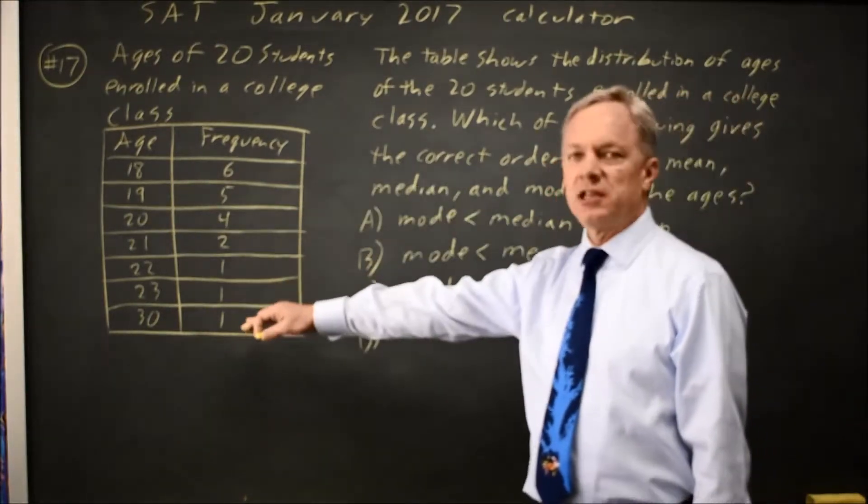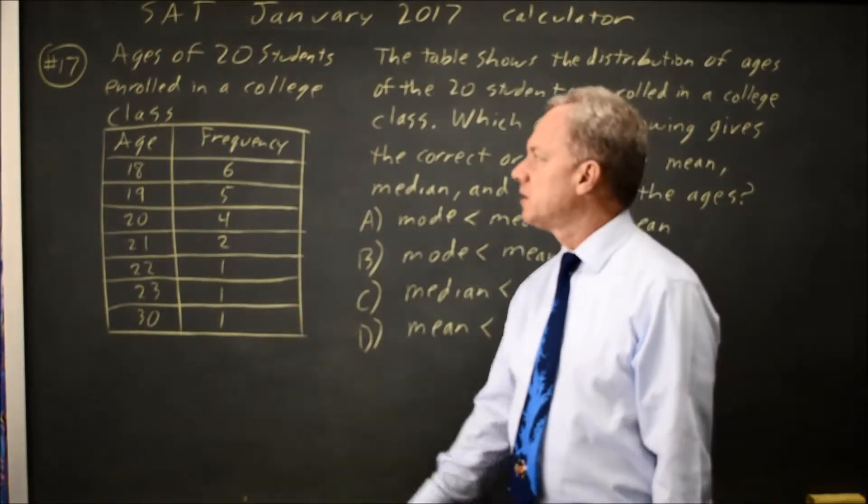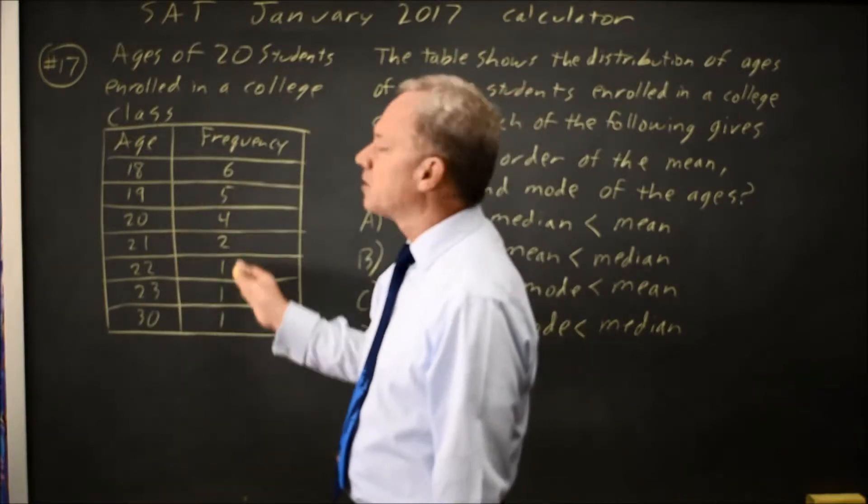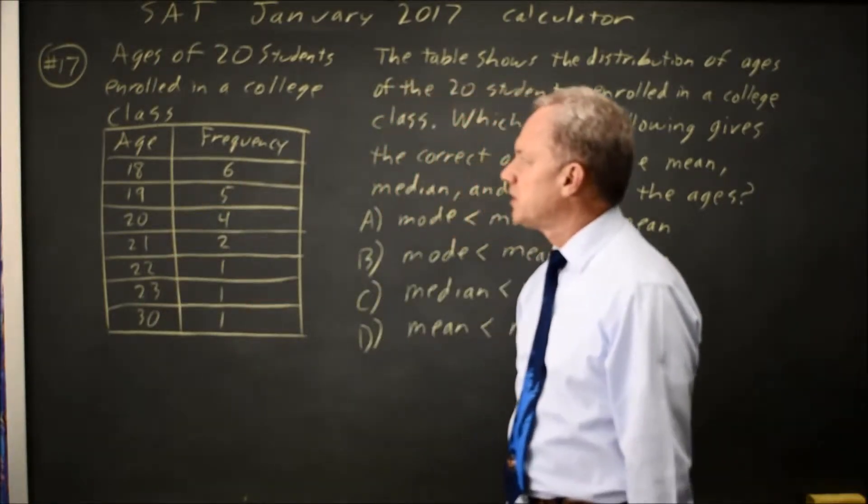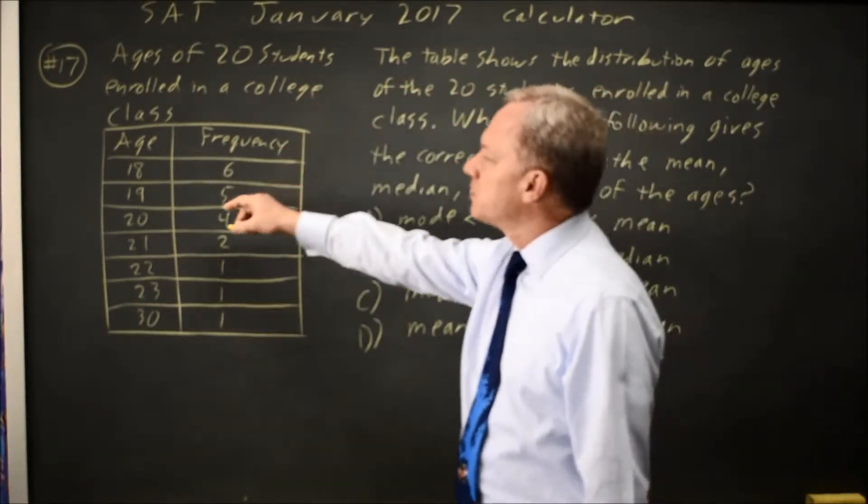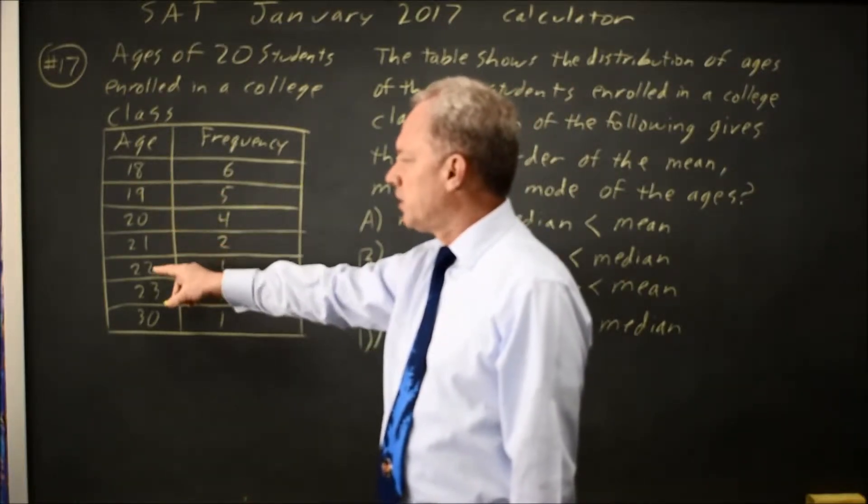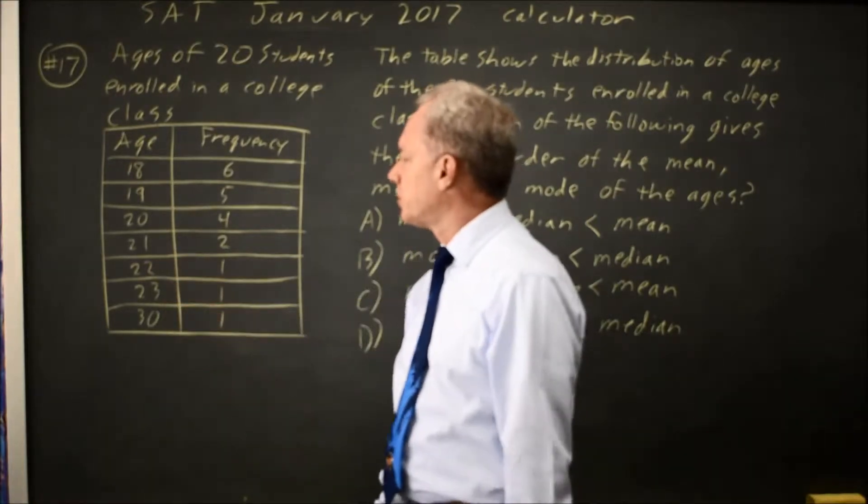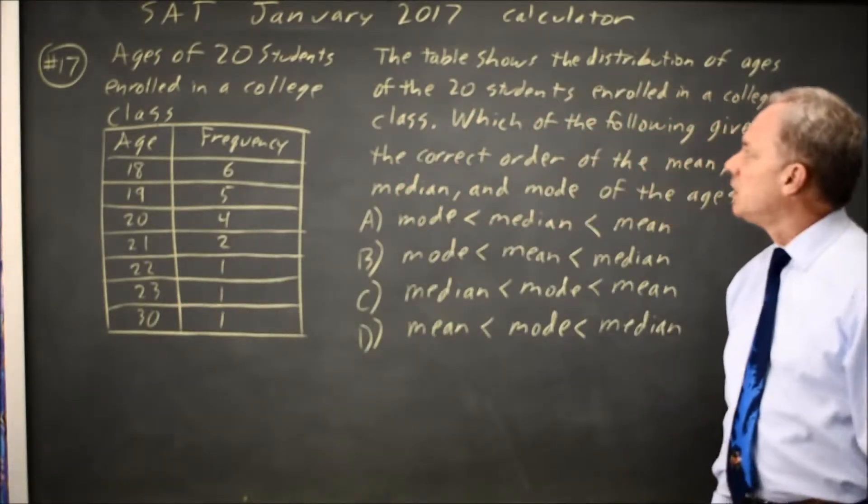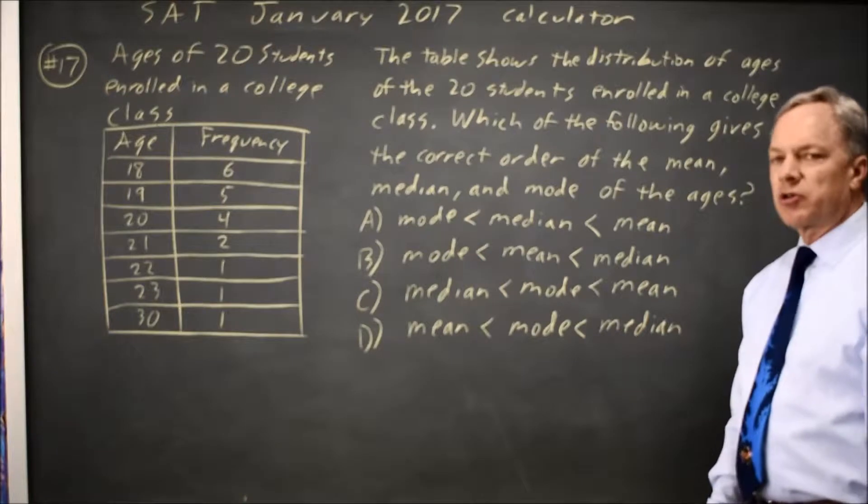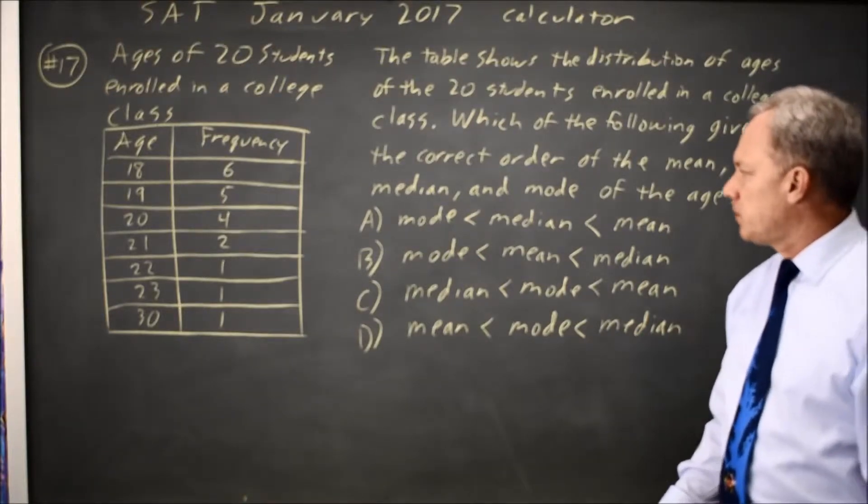College Board gives us a table for ages of students enrolled in a class where the first column is the age and the second column is the frequency, how many students of each age. There's a total of 20 students: 6 are 18 years old, 5 are 19, 4 are 20, 2 are 21, and one each 22, 23, and 30 years old. The question is which gives the correct order of the mean, median, and mode?